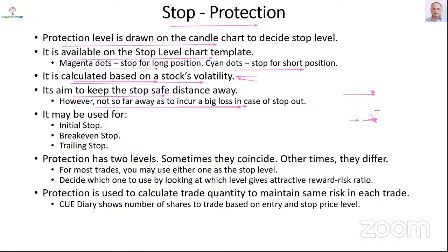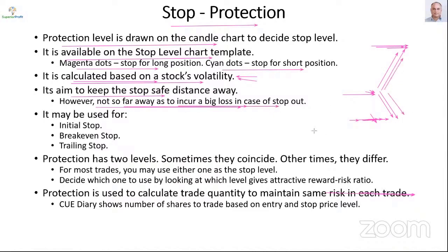It means that often, even with protection as the stop level, we will be able to decide a target — say upper boundary — that gives attractive reward-risk ratio. It keeps us at safe distance away but not too far, so we often find an attractive reward-risk ratio trade. It can be used not only for the initial stop loss, but also for breakeven stop and trailing stop. Different traders may apply initial, breakeven, and trailing stop in different ways — especially the timing of when to change from one to the next.